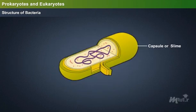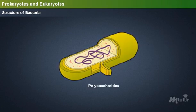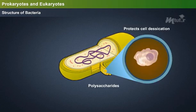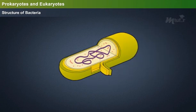Capsule or slime is the outer layer of the cell. The capsule layer is tightly attached to the cell wall, whereas the slime layer is loosely associated with the cell wall. Basically, the outer layer is composed of polysaccharides and protects the cell from desiccation and phagocytosis.